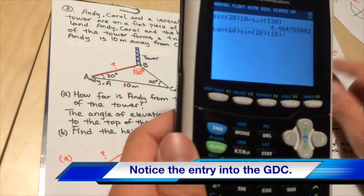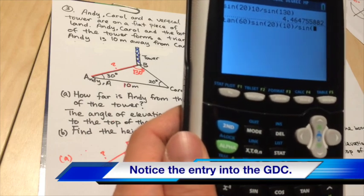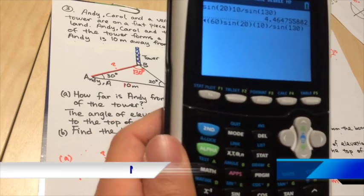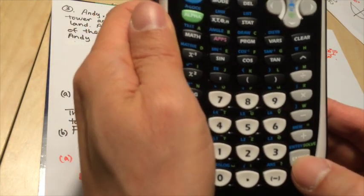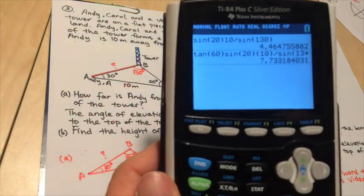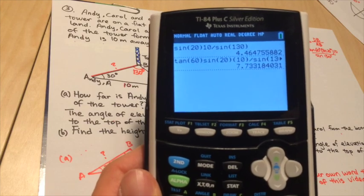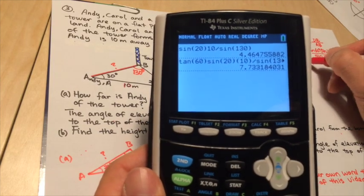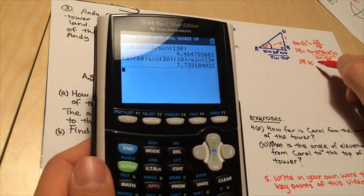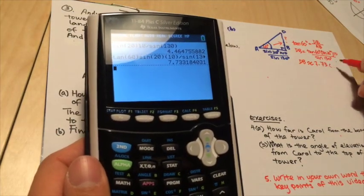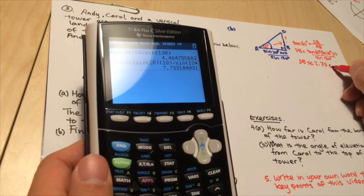I need to divide by sine 130. Okay. So right now you press enter. Right. So this is the answer. So DB is roughly 7.73 to 3SF. And this is in meters.